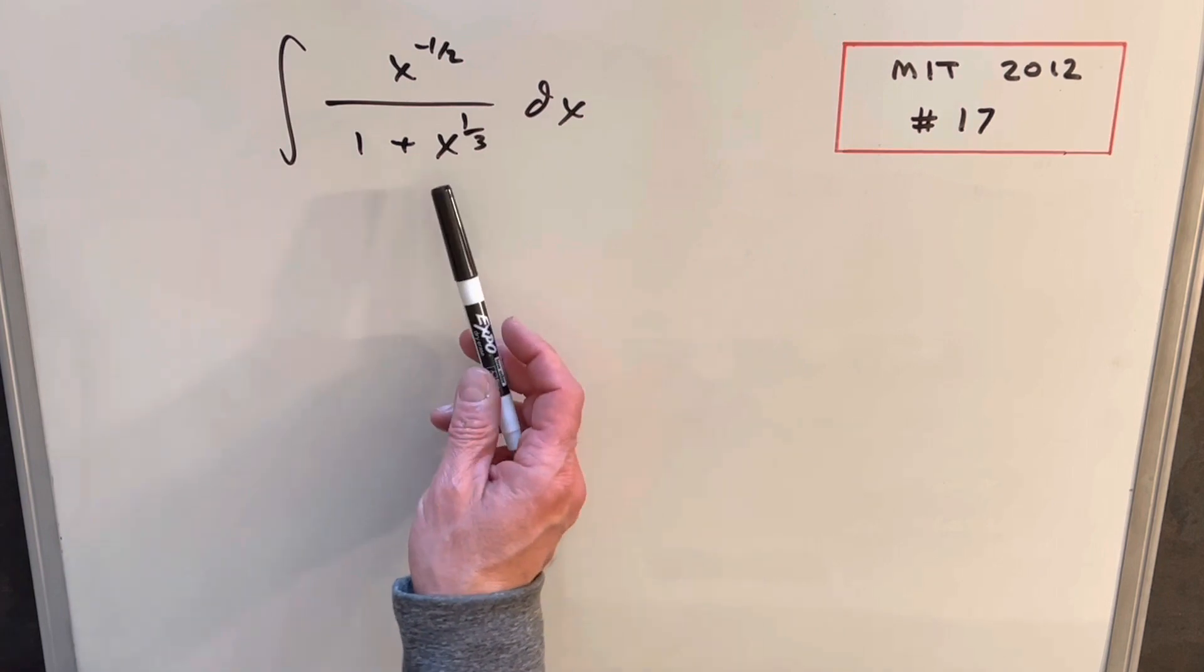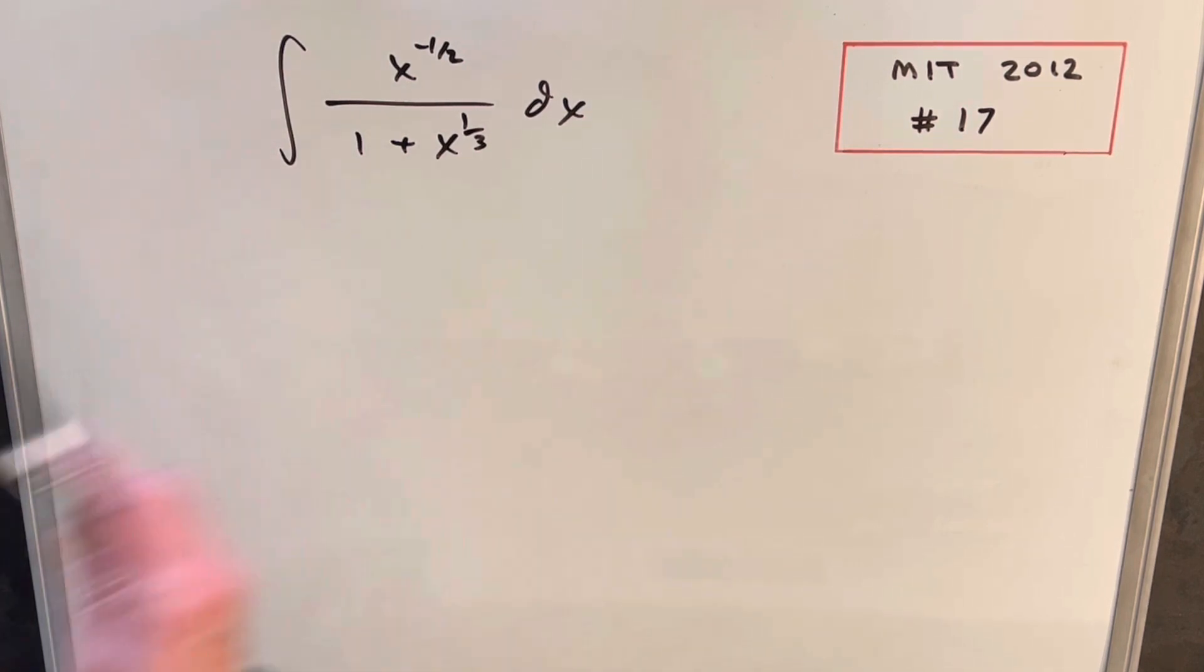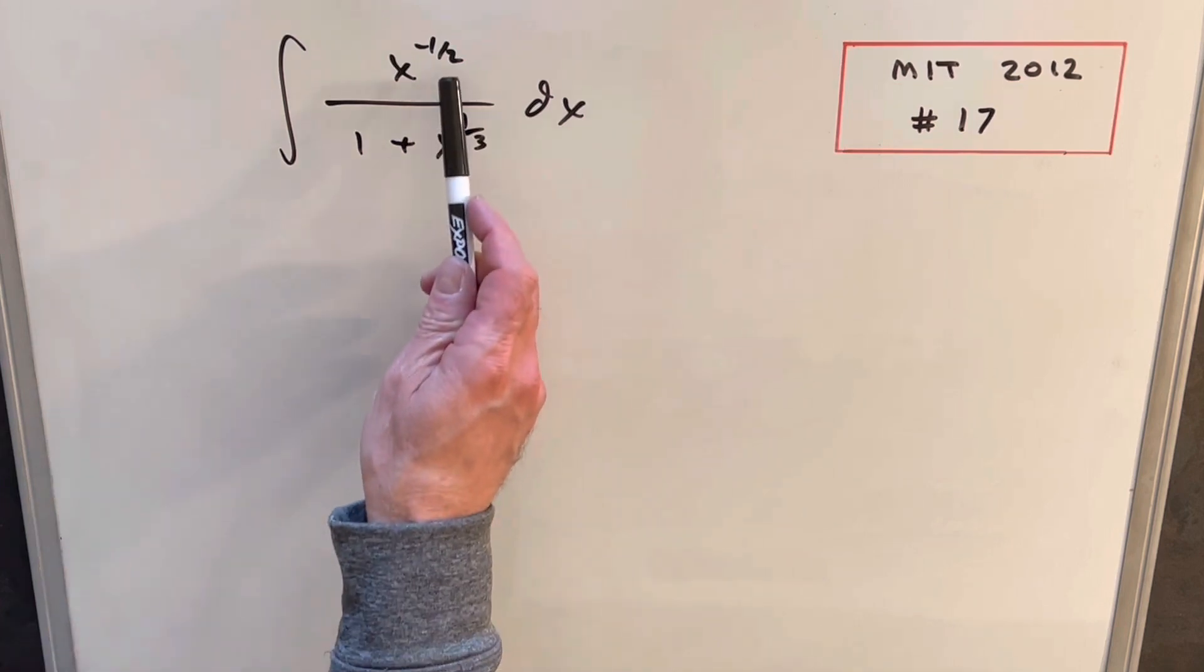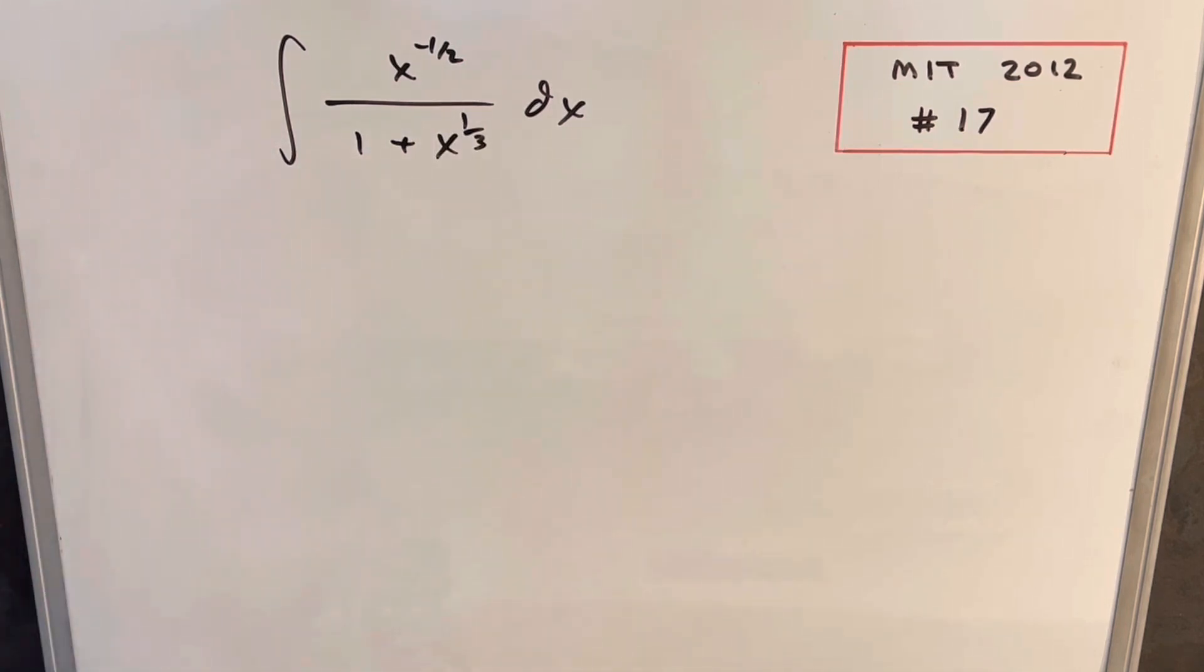Trouble here is if we did that, the derivative of x to the 1 third is going to be 1 third x to the minus 2 thirds. Not a very good match for our numerator. We could play with factoring out the x to the 1 third. There's quite a few different things we could try.